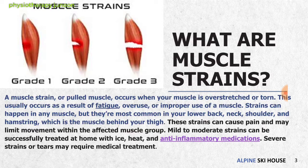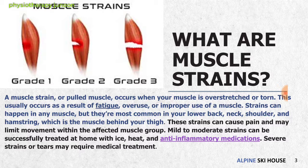A Grade 1 muscle strain, also called a pulled muscle, occurs when your muscle is over-stretched or torn. This usually occurs as a result of fatigue, overuse, or improper use. Muscle strain can happen in any muscle but is most common in the lower back, neck, shoulder, and especially the hamstring. Mild to moderate strains — Grade 1 and Grade 2 — can be treated at home with ice, heat, and anti-inflammatory medicines, but severe strains or tears may require medical treatment.